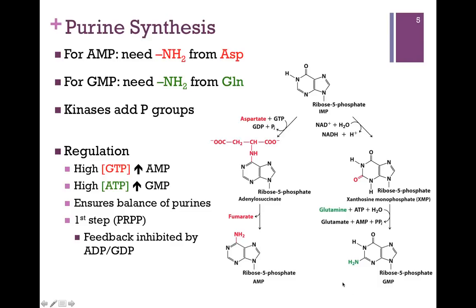Once we form AMP and GMP, kinases add the phosphoryl groups to convert these to the di- and triphosphates. The need for GTP hydrolysis to form AMP and ATP hydrolysis to form GMP gives us a clue about regulation: high levels of GTP favor the formation of AMP, and high levels of ATP favor the formation of GMP. In other words, high levels of one purine favor formation of the other, ensuring a balance of purine nucleotides — since forming nucleic acids requires a fairly even amount of each of the four nucleotides. Our first step, the formation of PRPP, is feedback inhibited by the products ADP and GDP.